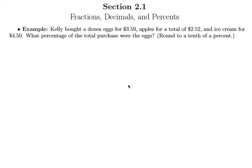Hopefully by now you understand that percents are really for comparing what you have to some sort of whole. In this case, we're comparing a particular purchase to the total purchases made at the store. Kelly bought a dozen eggs for $3.59, apples for a total of $2.52, and ice cream for $4.50. What percentage of the total purchase were the eggs?